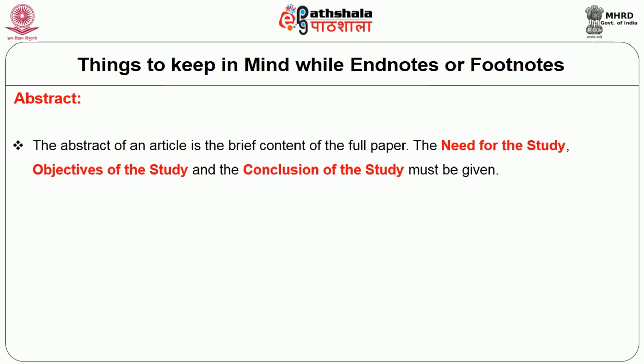The abstract of an article is the brief content of the full paper. The need for the study, the objectives of the study, and the conclusion of the study must be given in the abstract.